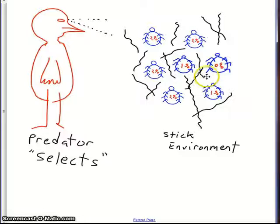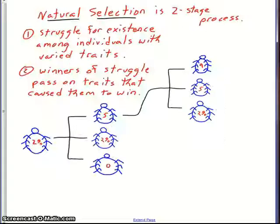And so Darwin's argument is that the interaction of predators with this population of insects in the environmental context of sticks is going to cause evolutionary change. Here's the basic idea: he called it natural selection, and we can conceptually break it down into two stages. First, there is a struggle for existence among individuals with varied traits.